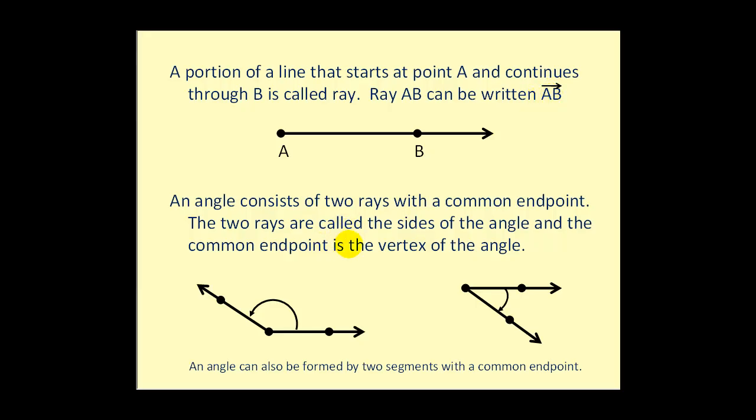An angle consists of two rays with a common endpoint. The two rays are called the sides of the angle and the common endpoint is called the vertex. So here we have the vertex, here we have one side, here we have another side.